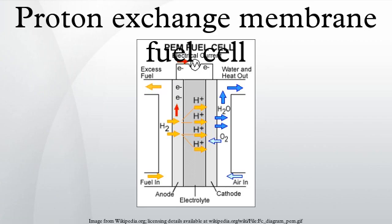To function, the membrane must conduct hydrogen ions but not electrons, as this would short-circuit the fuel cell. The membrane must also not allow either gas to pass to the other side of the cell, a problem known as gas crossover. Finally, the membrane must be resistant to the reducing environment at the cathode as well as the harsh oxidative environment at the anode.